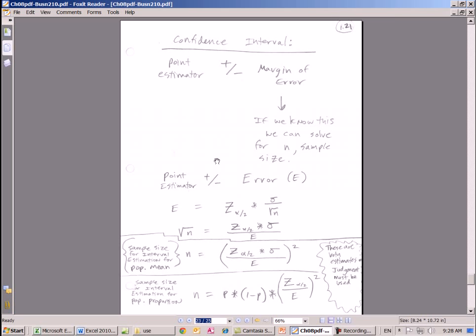Here's the general form of our confidence interval that we've been using: some point estimator plus or minus a margin of error. And the thing is, if we know this, meaning the margin of error, we can solve for n. So here's rewritten, point estimator plus or minus, we'll just say e for error.